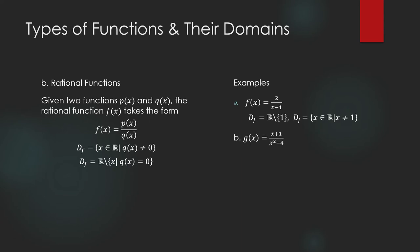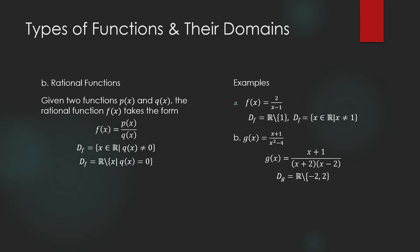How about g(x) = (x + 1) / (x² − 4)? The domain is the set of real numbers where the denominator is not equal to zero. Factoring x² − 4 gives (x + 2)(x − 2), so the function is undefined when x = −2 or x = 2. Therefore, the domain is the set of real numbers minus the set containing −2 and 2.